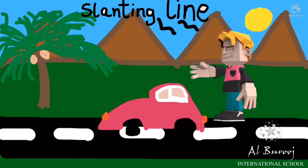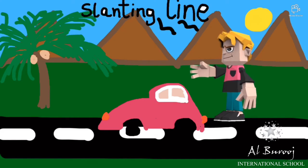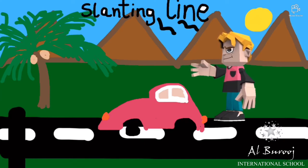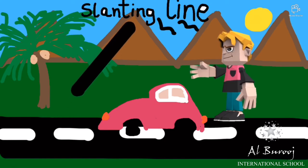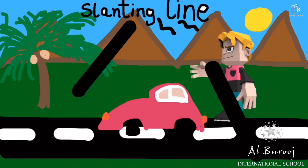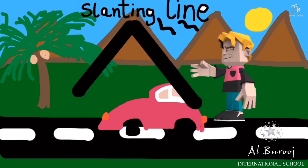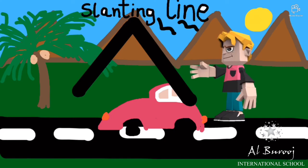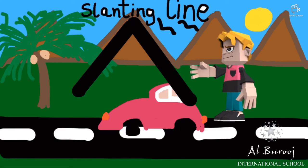They are neither standing nor sleeping lines. Oh, look at the mountains carefully — the lines are bending! The line which is bending towards the right is the right slanting line, and the line which is bending towards the left is the left slanting line. So these bending lines are called slanting lines.